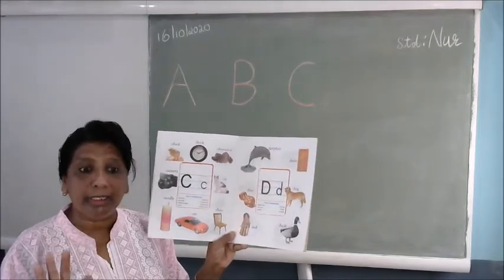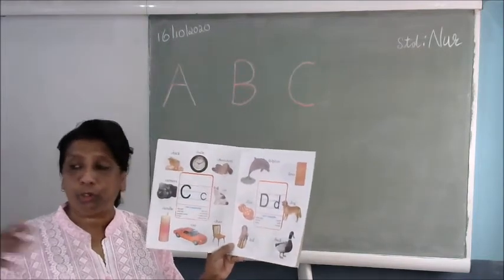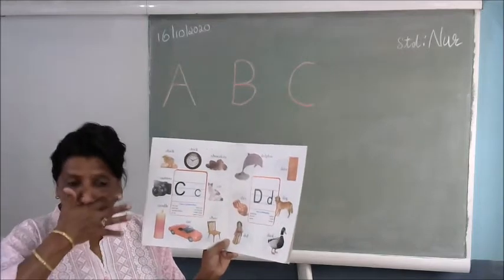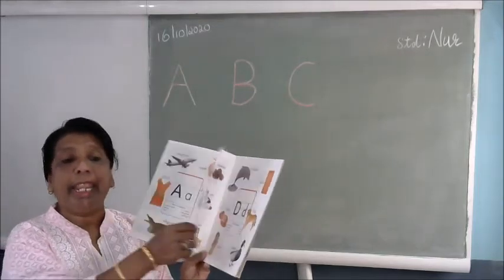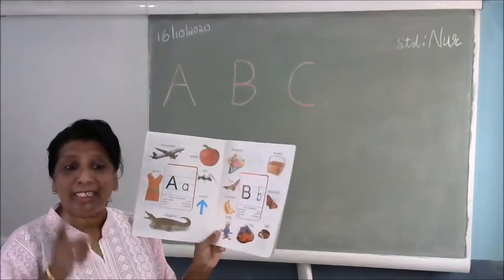So you must learn like this. All the pictures you must know. So we will be perfect when you go to a higher class. You will know anything. So I will teach you the pronunciation also. How will you say A. A for apple. A says a.